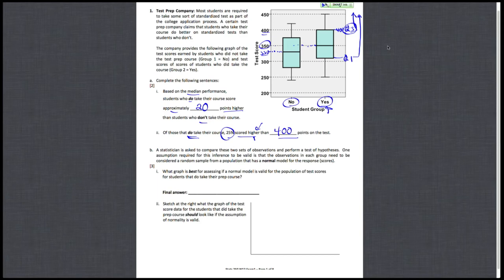Now we're asked to do a comparison of these two sets of observations to perform some kind of test of hypotheses, and one of the assumptions needed is that the observations in each group need to look like they're a random sample coming from a population that has a normal model. So what graph would we want to make, which would be best for helping us assess if a normal model is valid for the population of test scores for students who do take the prep course?